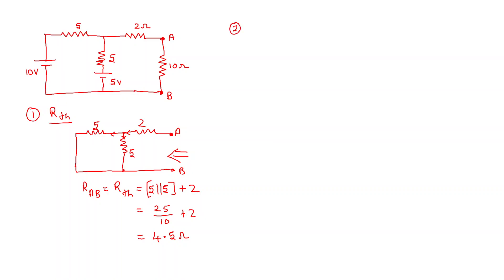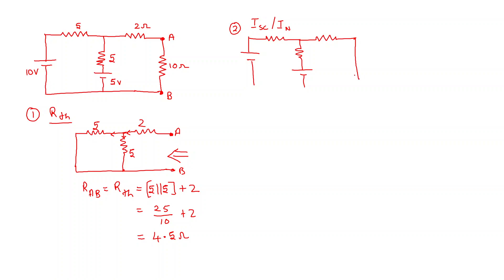The second step is to find the short circuit current. For finding this short circuit current, or Norton's current, you have to short your load. So draw a circuit where the load is shorted — across AB there will now be a short circuit.